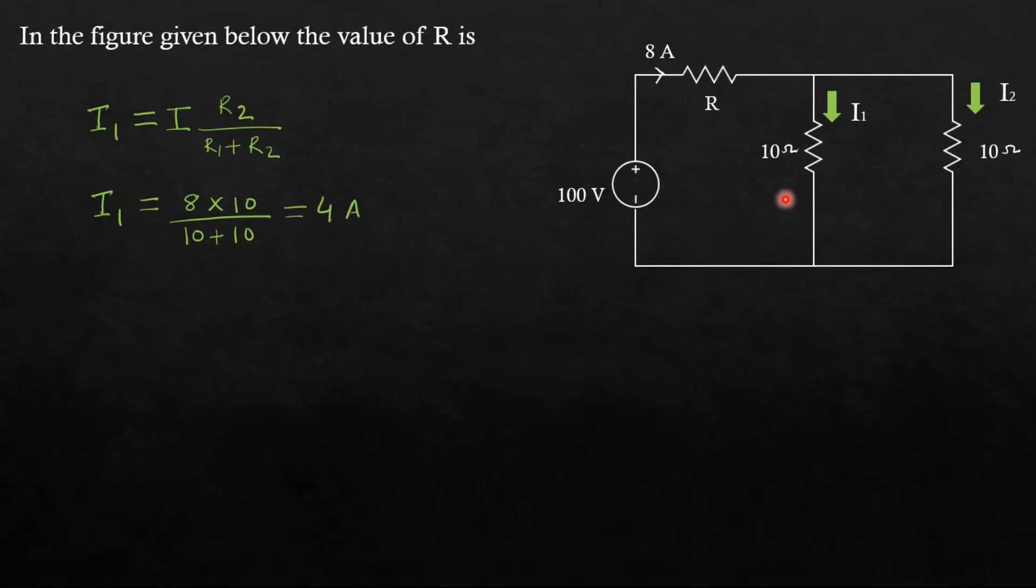And also, as you see these two resistances are equal, so the current will divide equally. I1 is 4A, similarly I2 will come out to be 4A. Now 4 plus 4 equals 8, this 8A got divided into these two branches.